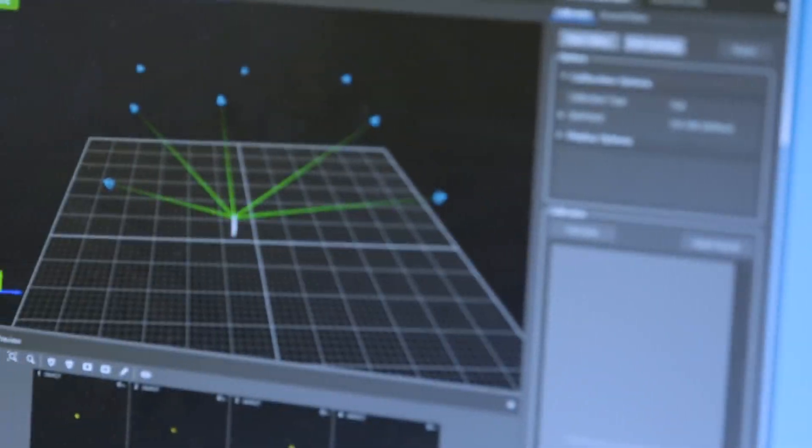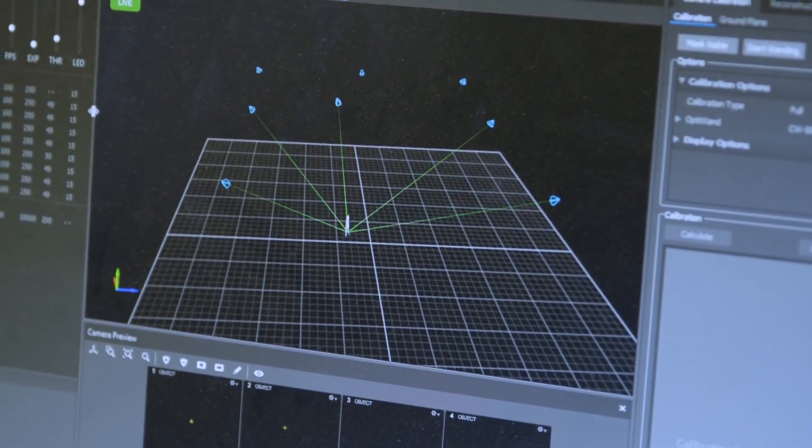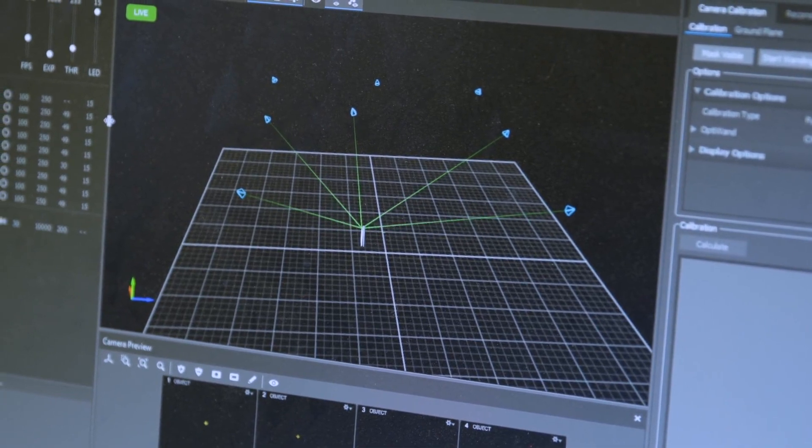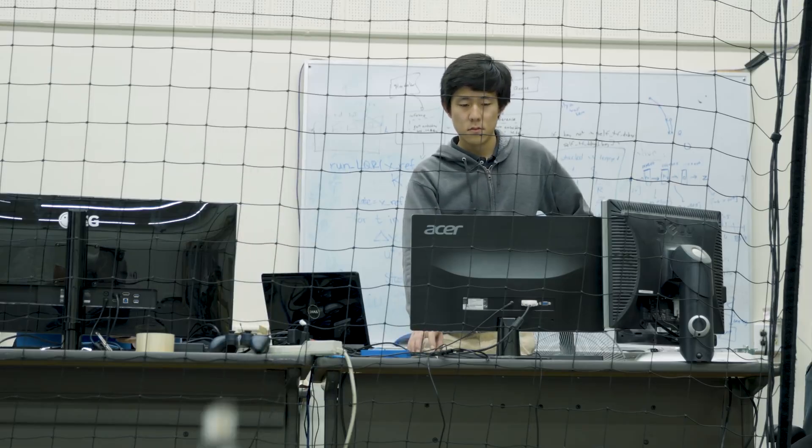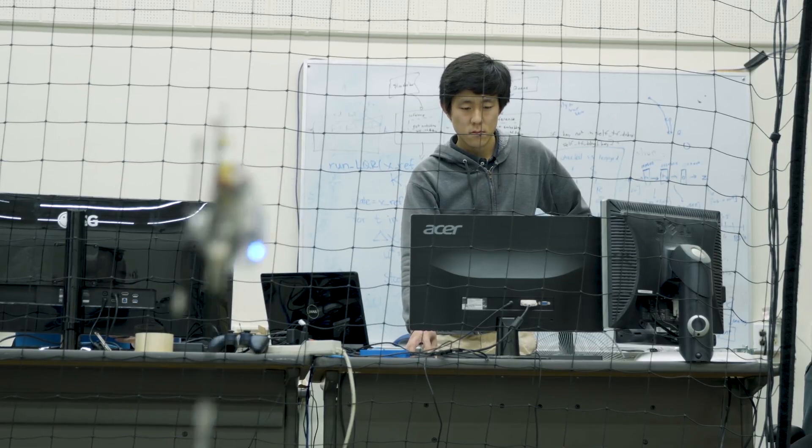This is the motion capture software we use to track where Salto is in the room. All these green lines point to where the cameras see it and this is how we can figure out how fast it's moving and what angle it's at.